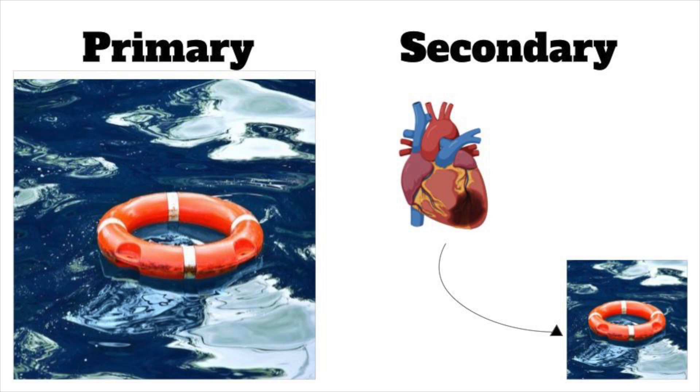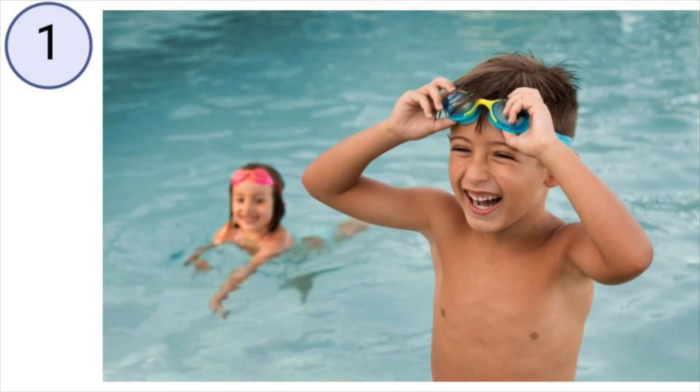It's worth taking a minute to consider the epidemiology of drownings because the different groups who experience drownings will have different causes and will affect our care. There's a trimodal distribution to patients who have fatal drownings in Canada. The first group is young children aged one to five years old, and in this group the drowning is almost always a primary drowning with no other medical cause contributing.